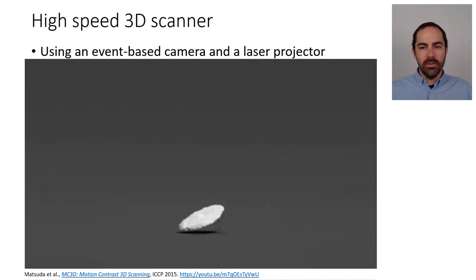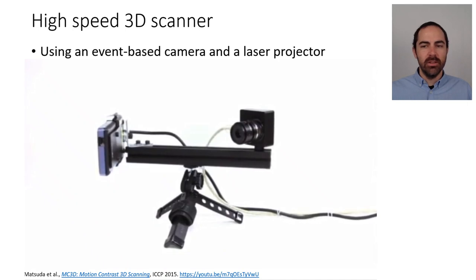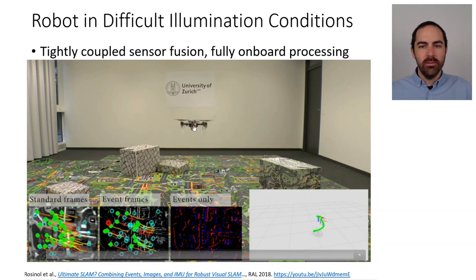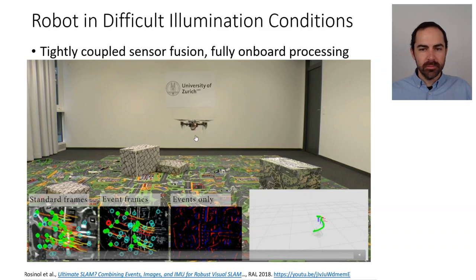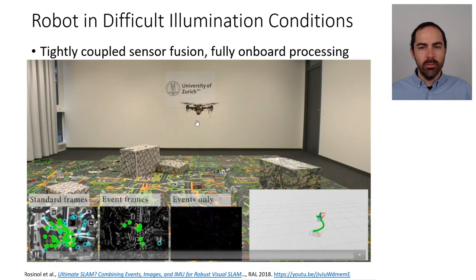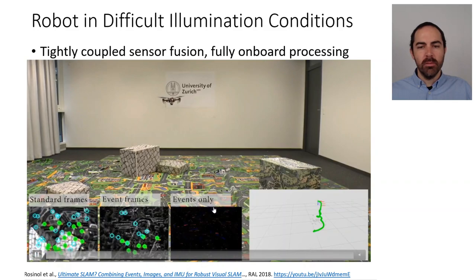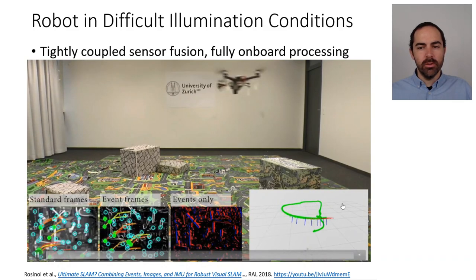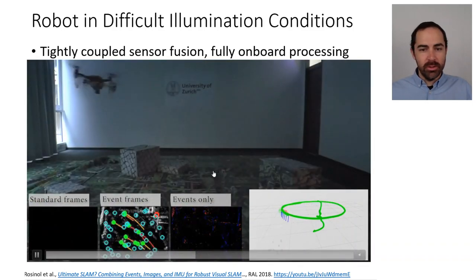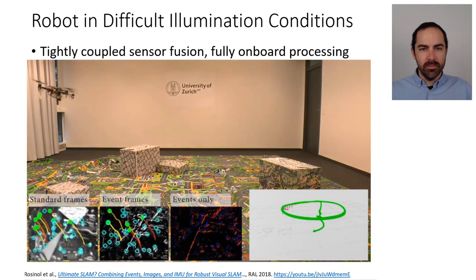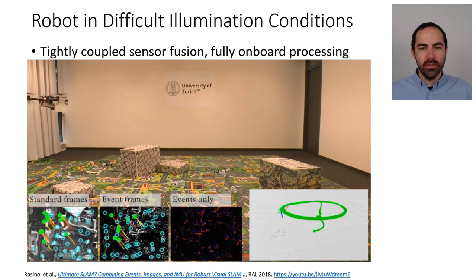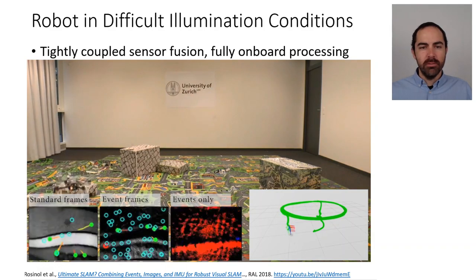So is this just a high-speed camera? Well, it's not only that. Here we have a drone from the University of Zurich with an event camera looking downward, combined with a standard grayscale camera and an IMU. All processing is done on board, combining information from the two sensors to fly the drone in closed-loop control in a circle. When the lights are turned off, the drone is still able to fly — showing that the camera has high dynamic range, allowing it to operate in difficult illumination conditions.